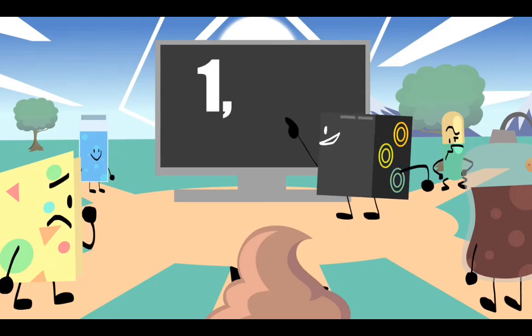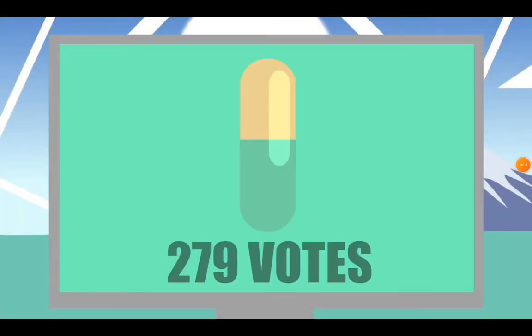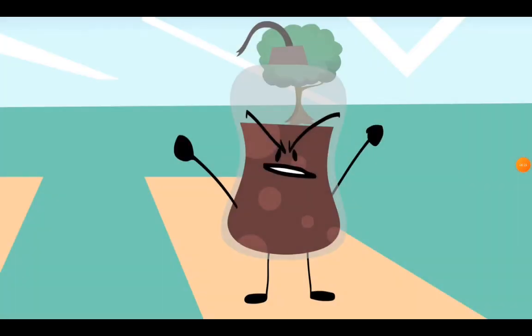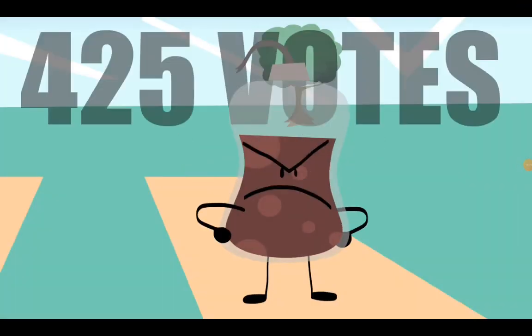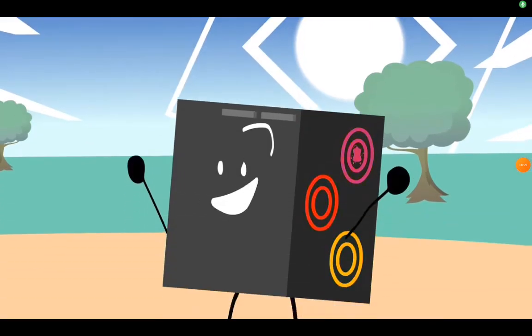Elimination time! We got 1,165 votes. The cringe pillow is safe with 279 votes. Now it's down to blood bag and scat. Blood bag, you've been eliminated with 425 votes. Scat is safe with 371. Make an invention - the coolest invention wins.